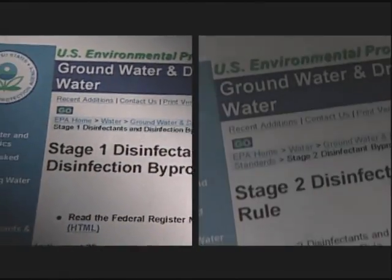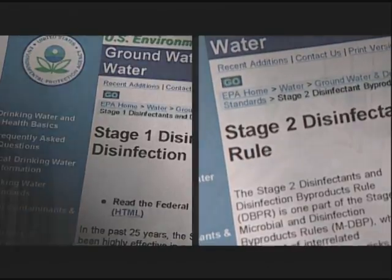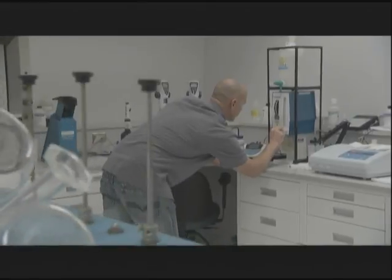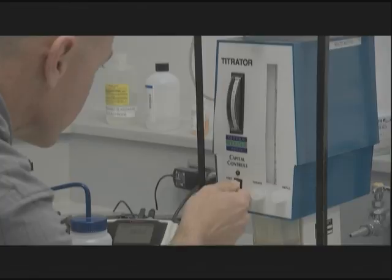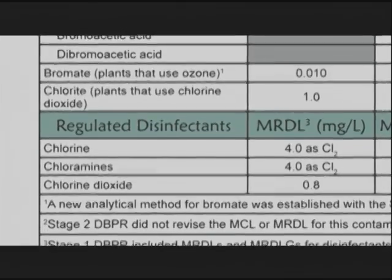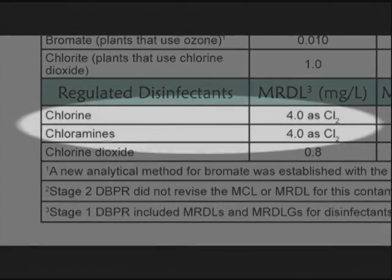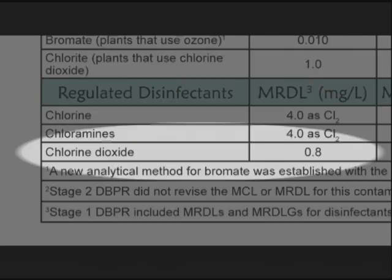The Stage 1 and Stage 2 disinfectants and disinfection byproducts rules also set a maximum residual disinfection level, or MRDL, for chlorine, chloramines, and chlorine dioxide. For both chlorine and chloramines, the maximum residual is 4 milligrams per liter. For chlorine dioxide, 0.8 milligrams per liter, or 800 parts per billion.